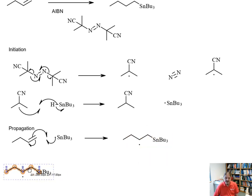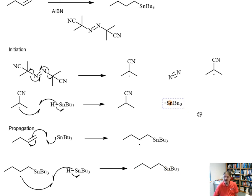Then in the second propagation step, there is a hydrogen abstraction from another molecule of tributyl tin hydride. Let's see if I can get those arrows a little closer together. The second hydrogen abstraction leads to the formation of the observed product, which is the addition of the tributyl tin hydride across the alkene, and it forms another tributyl tin radical which can go back into the first propagation step.